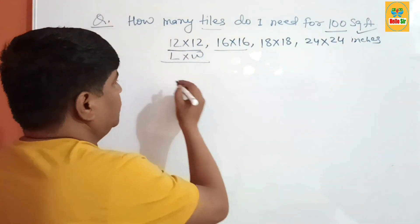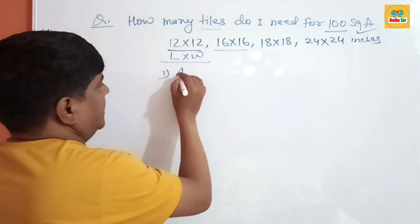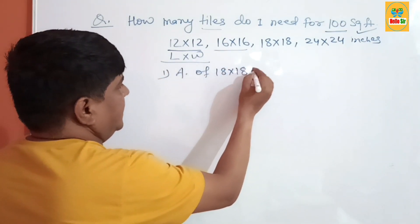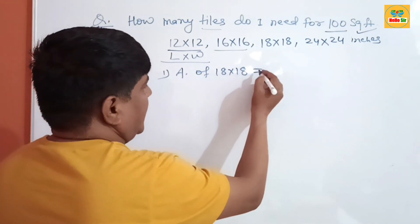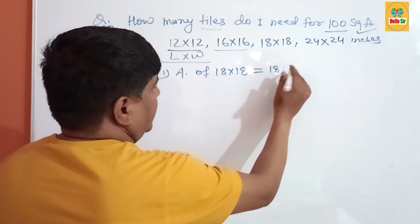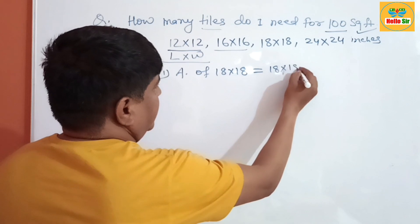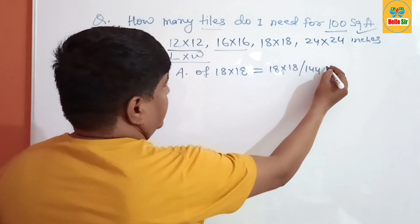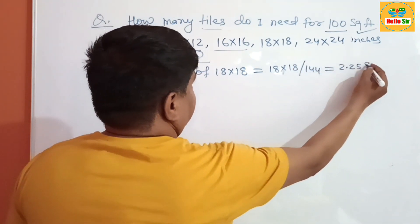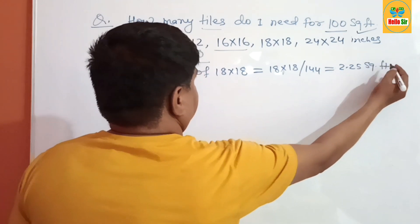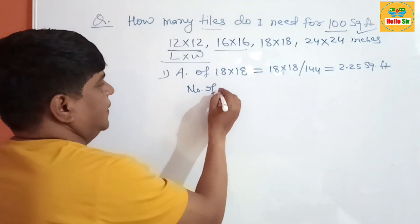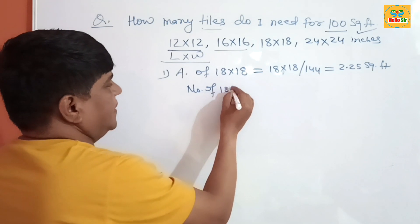Now to calculate for the 18 by 18 inch tile and how many tiles you need: first find the area of 18 by 18 inches. Multiply 18 by 18 to get 324 square inches, then divide by 144, which gives 2.25 square feet. Now calculate the number of 18 by 18 tiles.